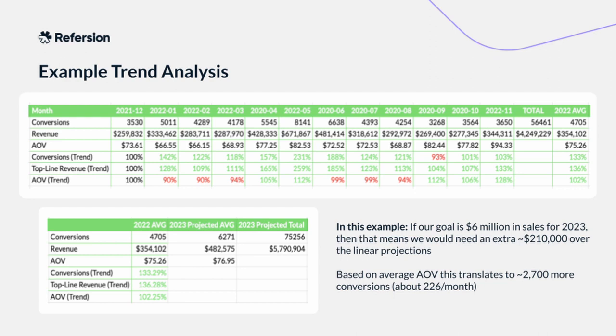Based on these numbers, this client is having a pretty successful program. More importantly, there's enough data there that you can start to draw conclusions. If we presume the linear growth they had over 2022 will continue into 2023, we can see that if all trends continue on that same pattern, they'd have approximately $5.7 million in affiliate revenue — that's about 75,000 conversions with an AOV of a little under $77. On a monthly basis, that's about 6,200 conversions a month.